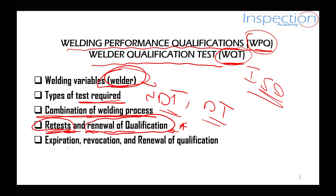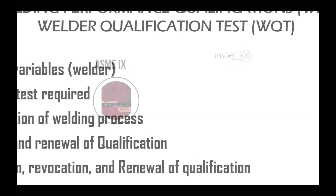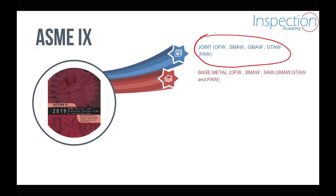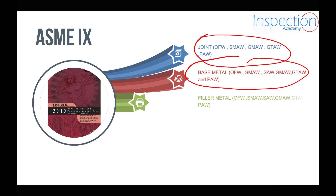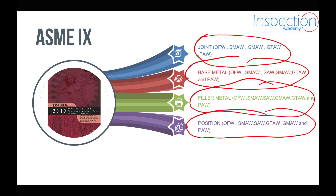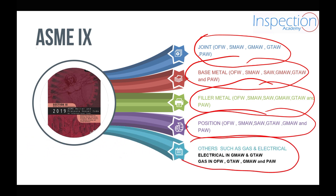First of all, let's talk about the welder variables. To test the welder according to ASME Section 9, we have some variables. Among those, we have joint variables, base metal variables, filler metal variables, position variables, and other variables such as electrical variables in the GMAW and GTAW processes, and also gas variables in oxy-fuel welding, gas tungsten arc welding, gas metal arc welding, and plasma arc welding.